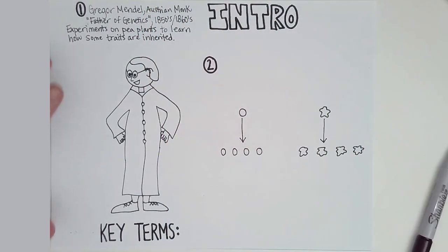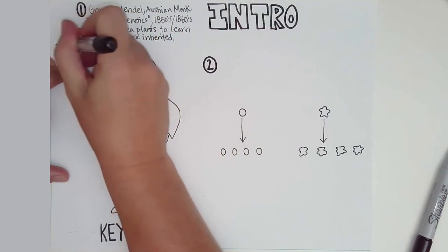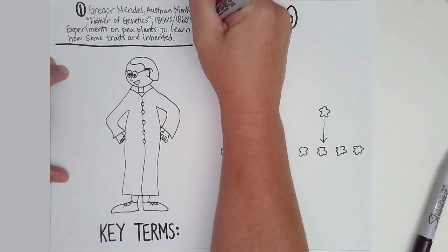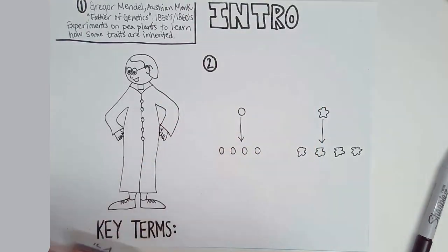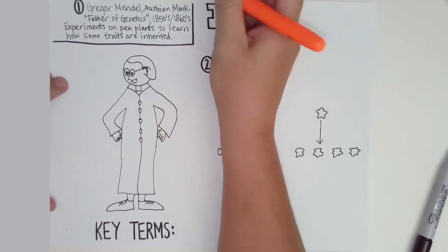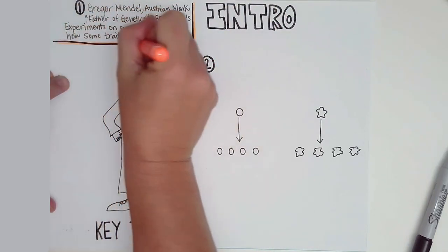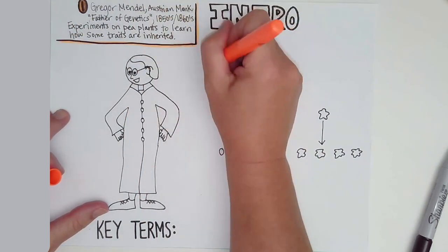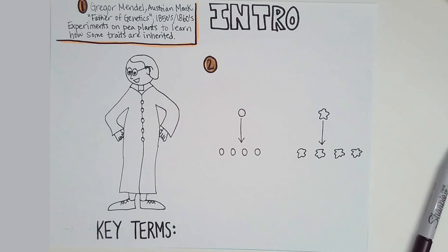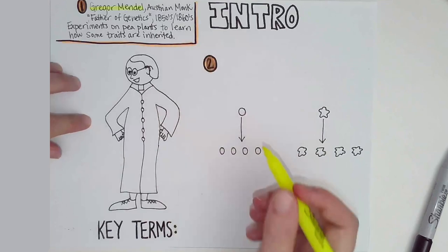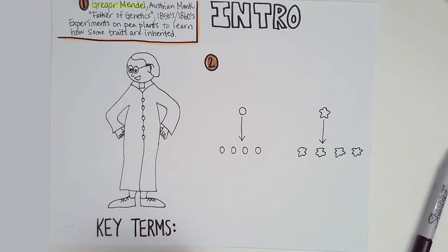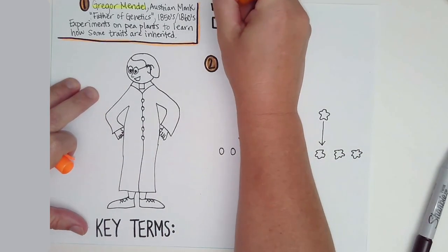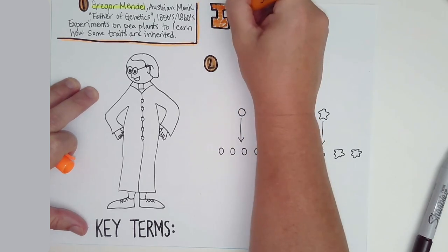He's drawing a box around the notes and highlighting sections in orange, numbering key points, and highlighting Gregor Mendel's name in yellow to emphasize important terms on the page.